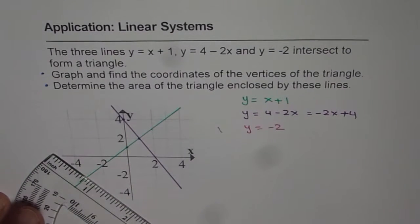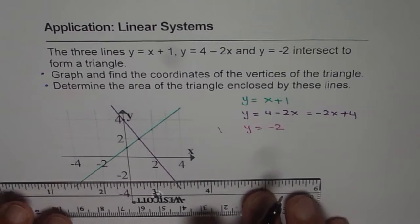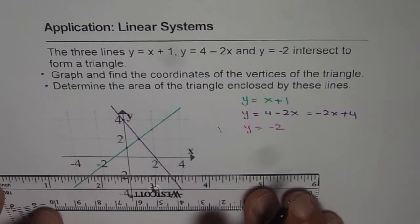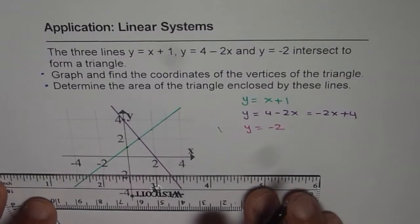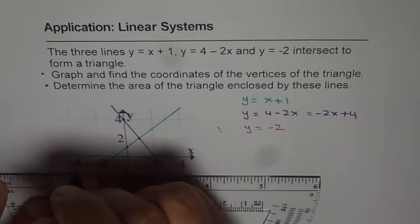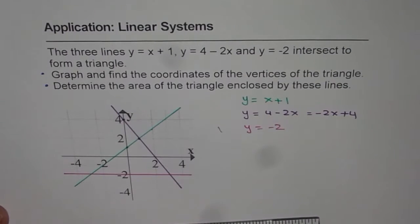The third line is y equals minus 2. It's a horizontal line, y equals minus 2. So let's draw this one. Now these three lines intersect at three different points, forming a triangle.